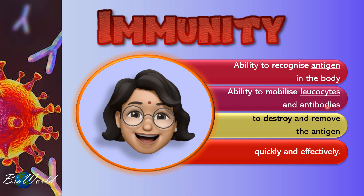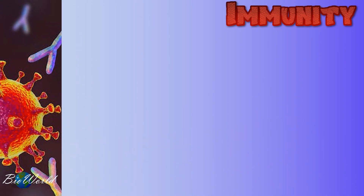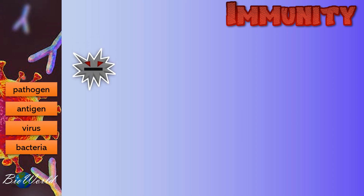How leukocytes and antibodies do the destruction is what I'll be talking about today. Immunity begins with this microorganism. It is called a pathogen, antigen, virus, or even a bacteria. However, it is not the whole microorganism that triggers an immune response — it is actually the surface proteins that cause our immune response to react. These proteins are called epitopes.